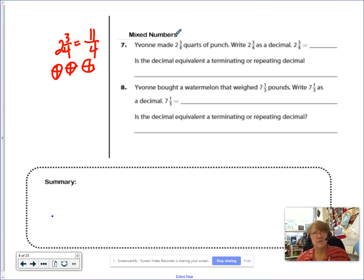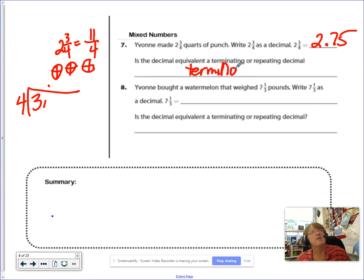But I'm saying, if you already have the mixed number, the two is in front of the decimal point, just deal with the three-fourths off to the side here, right? Three divided by four. You might even know that one off the top of your head is seventy-five-hundredths. Is the decimal equivalent of two and three-fourths terminating or repeating? This is a terminating one. Terminating. Yay!